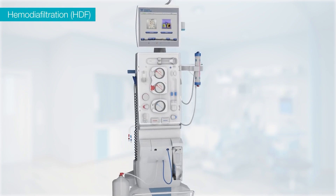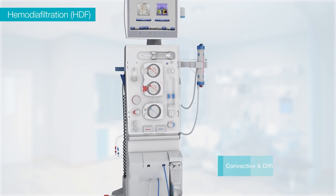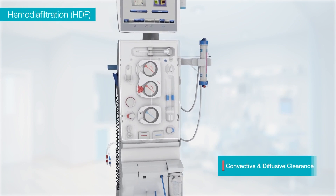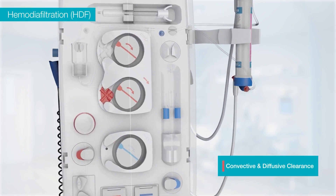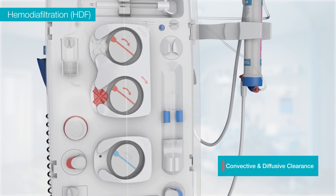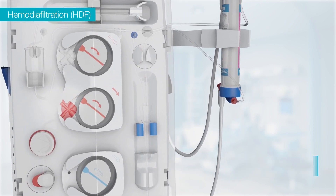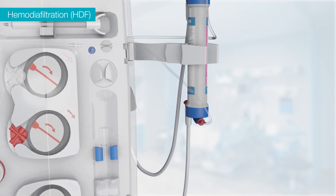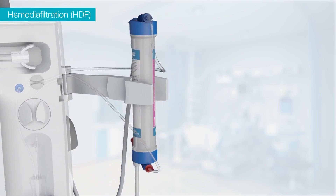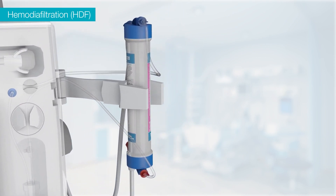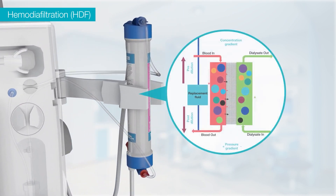Hemodiafiltration (HDF) is a form of renal replacement therapy that utilizes convective in combination with diffusive clearance, which is used in standard haemodialysis. Compared with standard haemodialysis, HDF removes more middle molecular weight solutes. Unlike conventional haemodialysis, hemodiafiltration uses the principles of diffusion, convection and ultrafiltration for the removal of uremic toxins during renal replacement therapy.